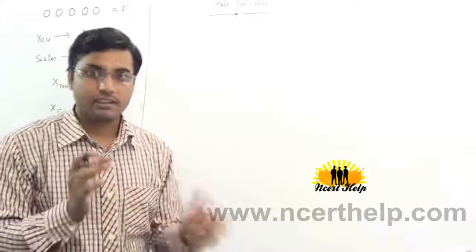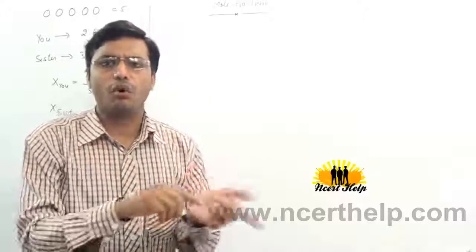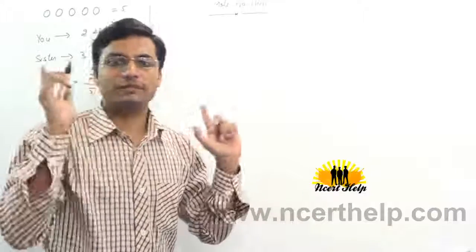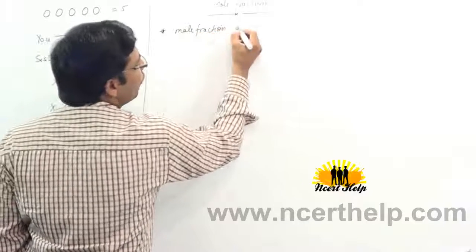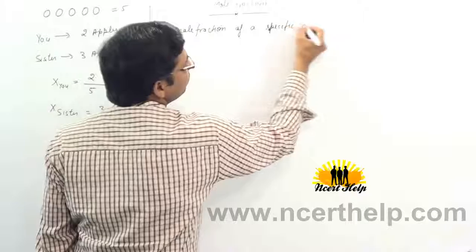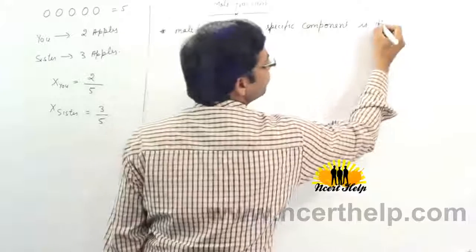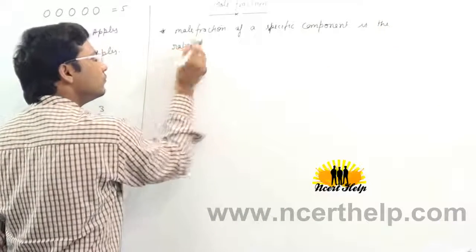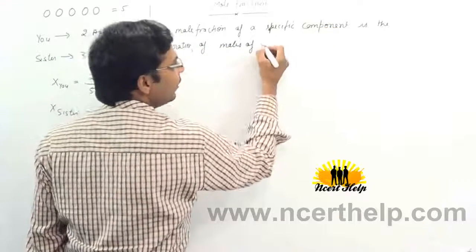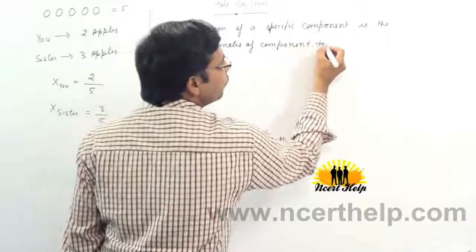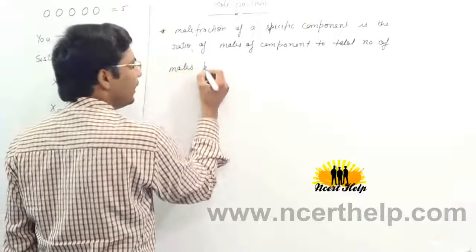Now let's move on to mole fraction. In mole fraction, there are some moles in a solution. Mole fraction represents the number of moles of a specific component — it can be solute or solvent — divided by the total number of moles. So mole fraction of a specific component is the ratio of moles of that component to the total number of moles present in the solution.